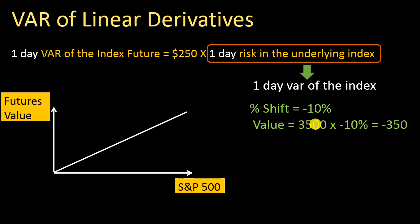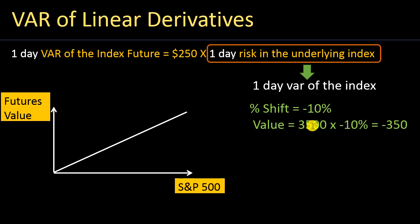Let's assume that today the index value is 3,500. If the index drops by 10%, tomorrow the index can lose 350 points in a day — since we are calculating one-day risk. So the one-day value at risk of the index is 350 points, or in percentage terms, 10%. Once you calculate the VAR of the index, you simply multiply that by the sensitivity to get the VAR of the derivative — in this case, the index future.